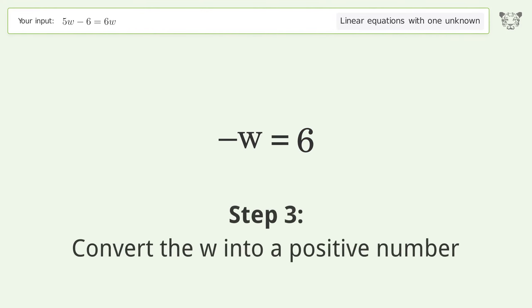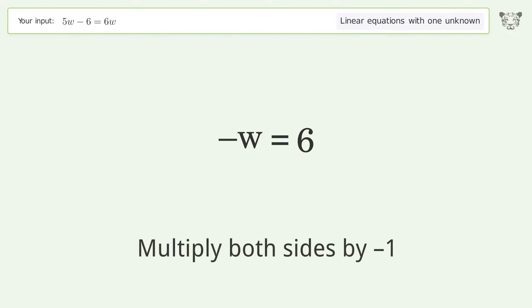Convert the w into a positive number. Multiply both sides by negative 1. Remove the ones. Simplify the arithmetic.